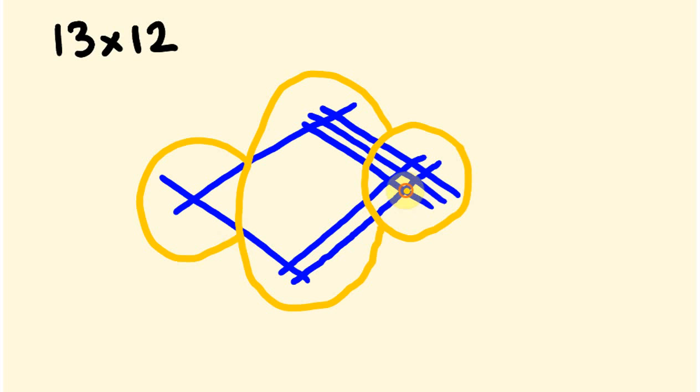And we simply count intersections to get our answers. I'll show you what I mean by this, we went one, two, three, four, five, six, so the units was a six, one, two, three, four, five, the tens was a five, and the hundreds was a one, so our answer, 156.